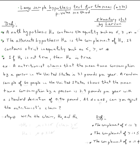Like always, step one, we start with writing the claim H₀ and Hₐ. What's the claim? Where's the claim? Right here. The nutritionist claims that the mean tuna consumption by a person in the United States is 3.1. So the claim is the mean equal 3.1.